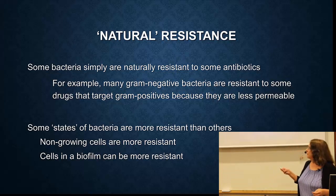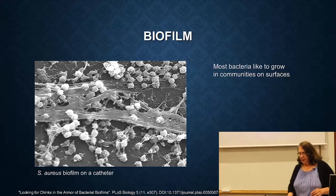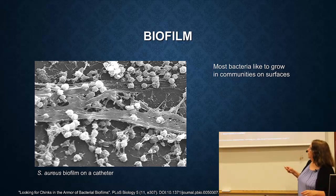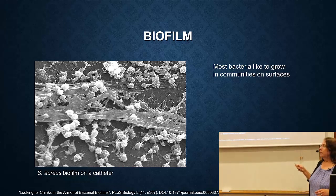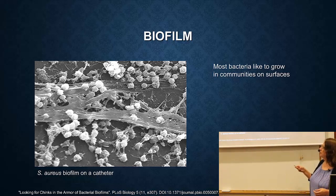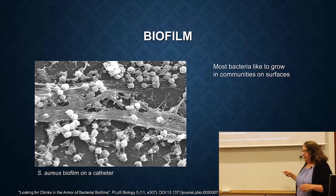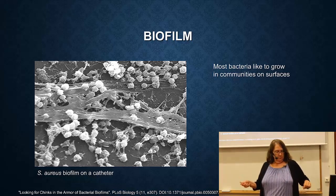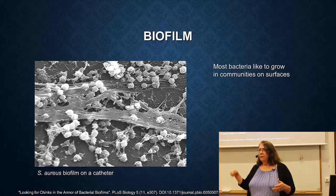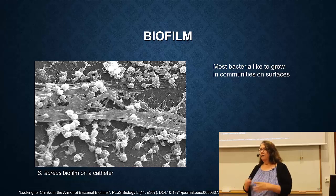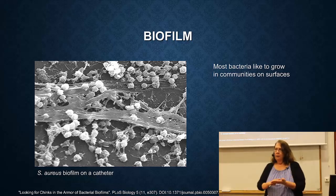In addition, there's something called biofilm, and these can be much more resistant. Biofilms are growth of cells on surfaces. Most bacteria like to grow in communities on surfaces. This is an example of a staph biofilm taken from a catheter. You brush your teeth in the morning, you're removing a biofilm. You pick up a rock in the river that is usually covered by a biofilm — they grow everywhere.